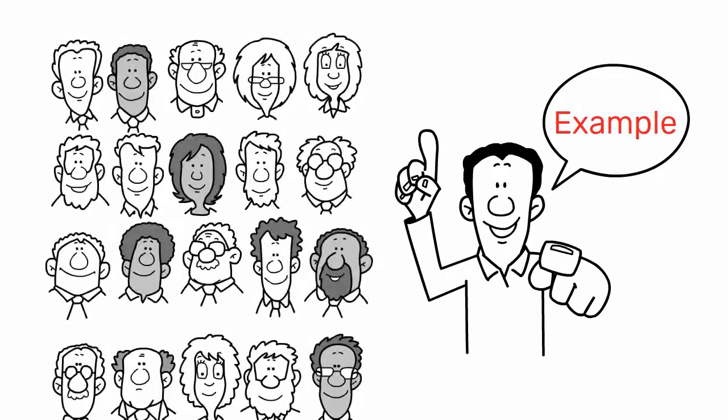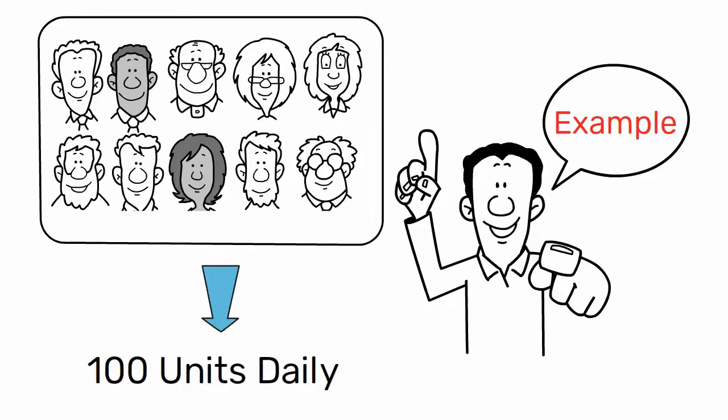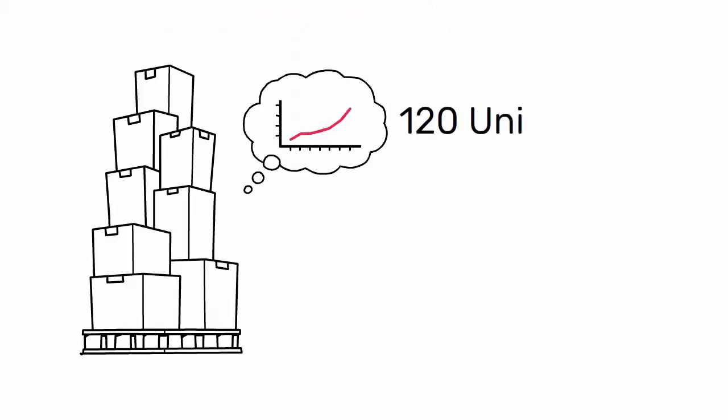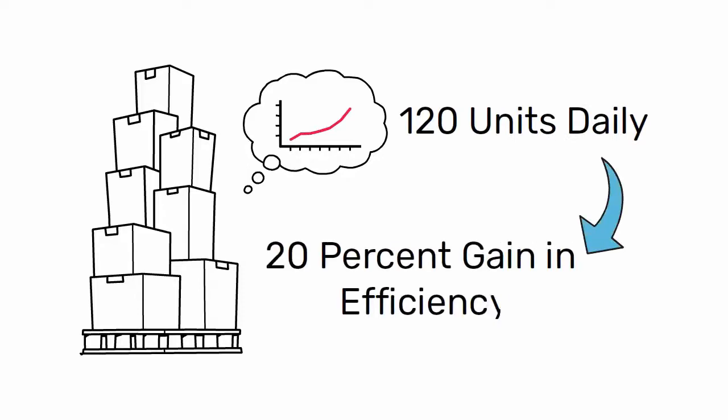Let's say you have 10 people producing 100 units daily. If improvements to the process boost output to 120 units daily, there is an apparent 20% gain in efficiency.